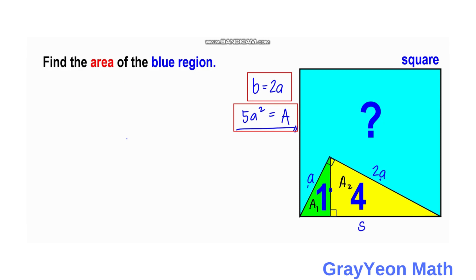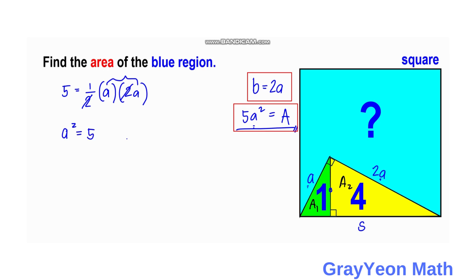Now we need to find the value of a squared. We use the formula for the area of a triangle, focusing on the combined area of the green and yellow triangles. The combined area equals five. It is equal to one half times base times height, where we choose base as a and height as 2a. Canceling the two gives us a squared equals five square units.